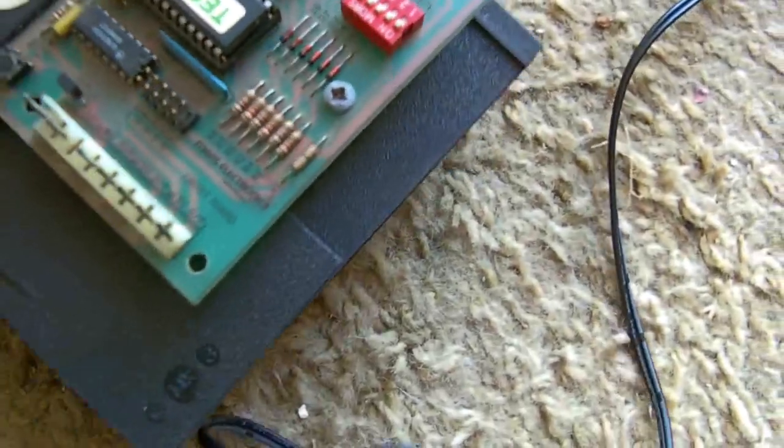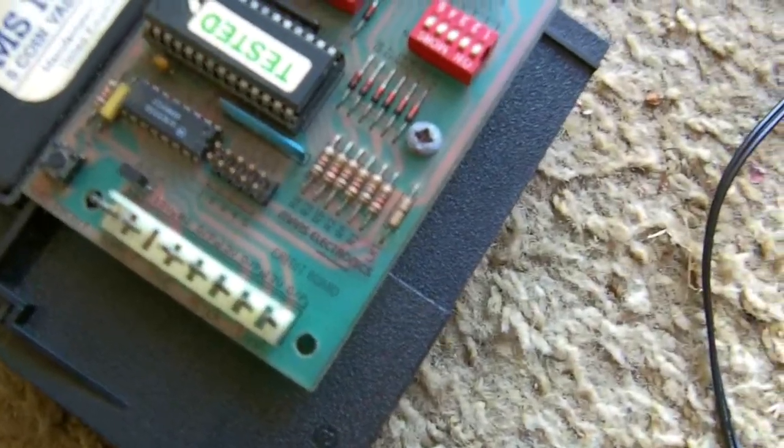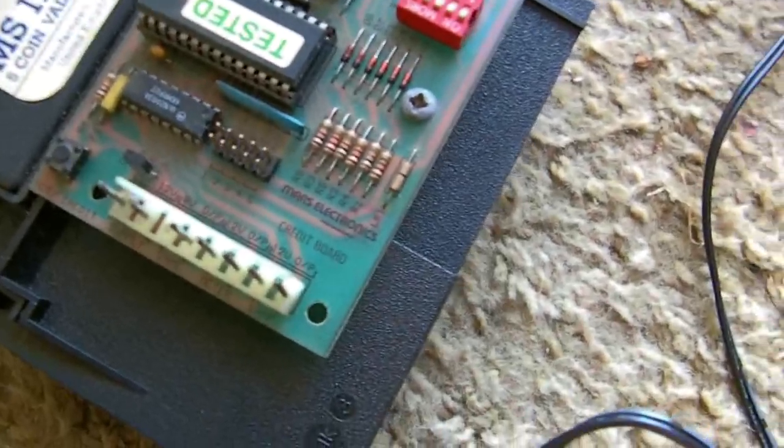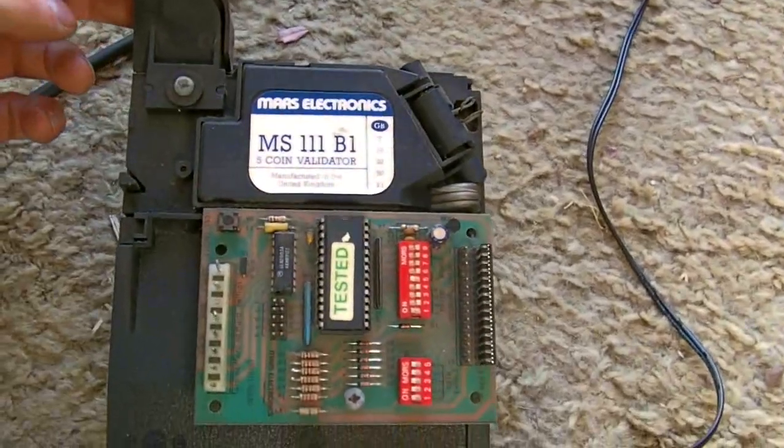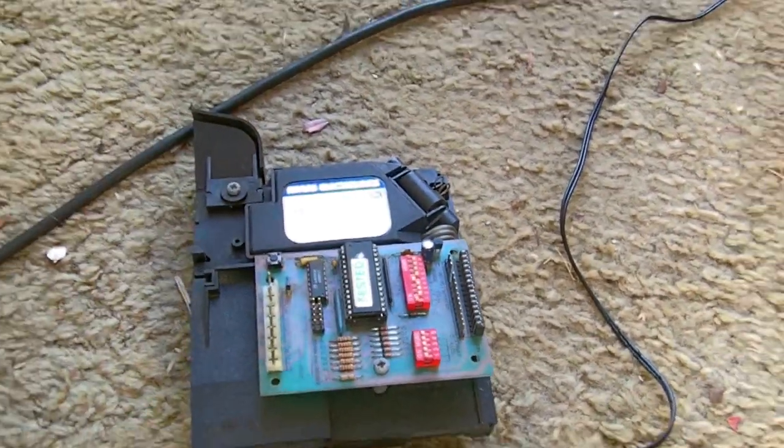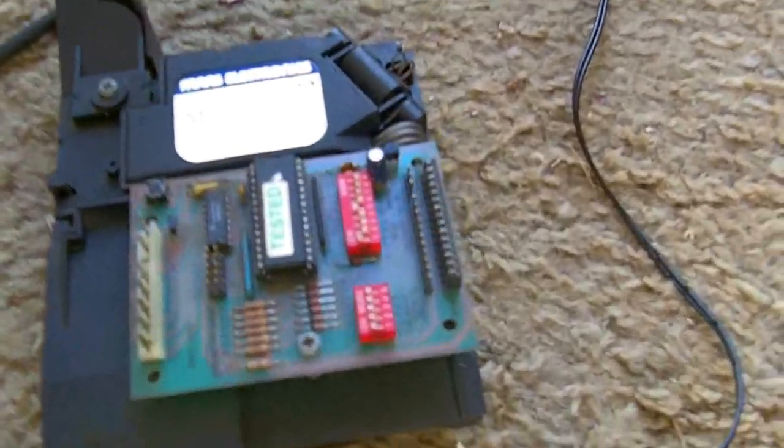In America you just have your single coin mech where you put your coin in and it triggers a micro switch and you get a credit on your game. In the UK we can use different coins, so you've just bought yourself an arcade cabinet.